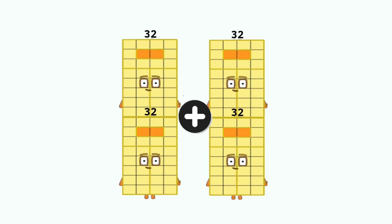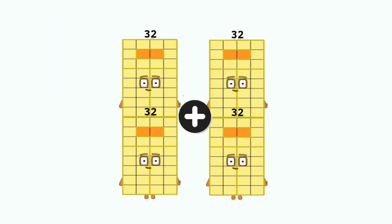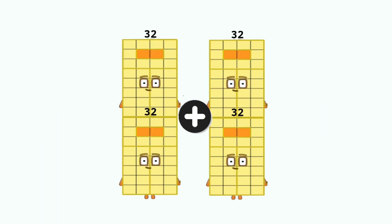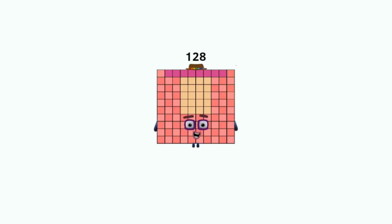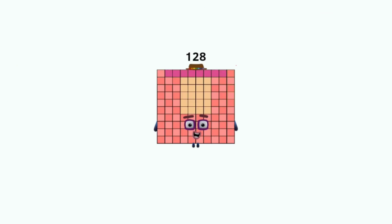Number blocks: thirty-two plus thirty-two, and as many as four times, equals one hundred twenty-eight.